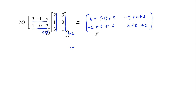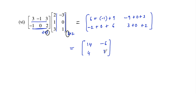So we get: 6 minus 1 plus 9 is 14; negative 9 plus 0 plus 3 is negative 6; negative 2 plus 0 plus 6 is 4; and 3 plus 0 plus 2 is 5. The resulting 2 by 2 matrix is the answer for the sixth problem.